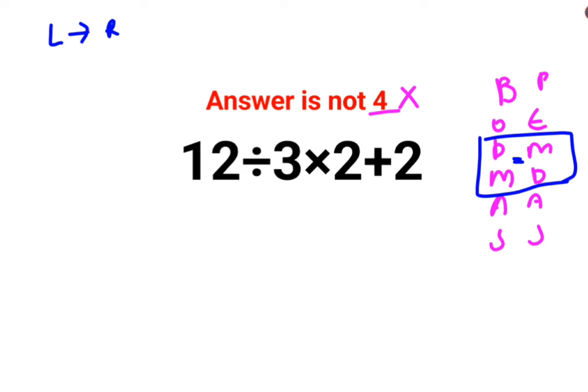So first what we will do is, we will do 12 divided by 3, which is 4. Then we will keep the ×2 as it is, plus 2.